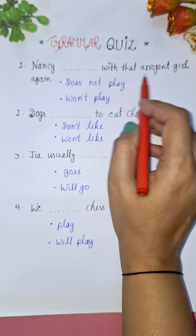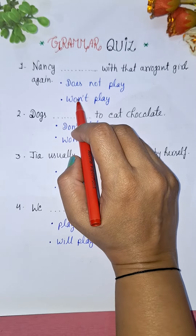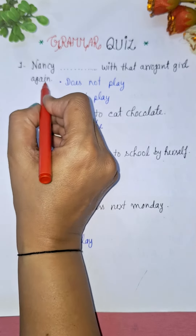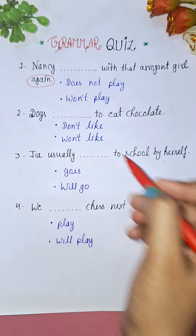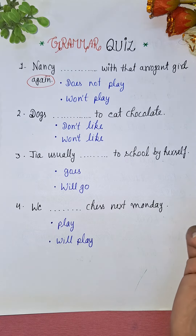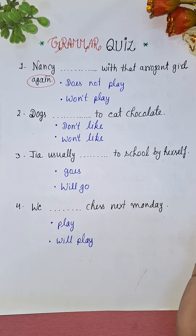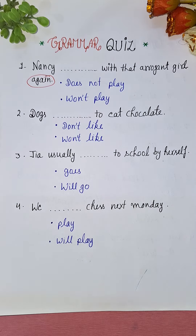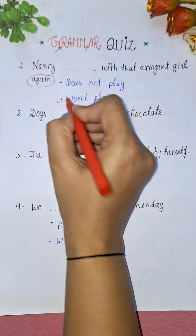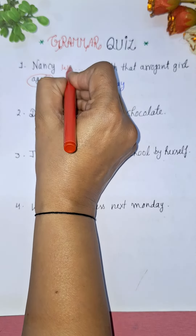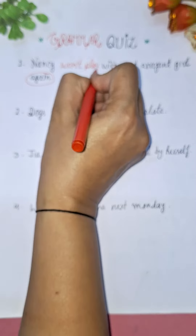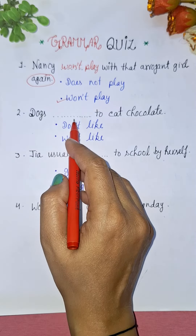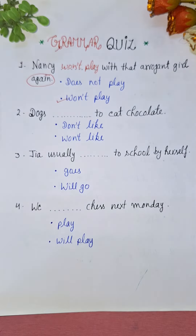Let's start. Nancy dash with that arrogant girl again. Which option will be right here? The keyword here is 'again.' If we say 'Nancy will not play with that girl again,' that will be the right answer. So 'will not play' is the right option here.